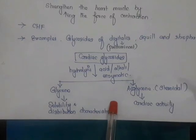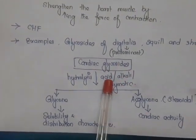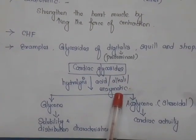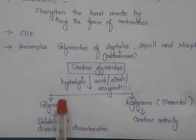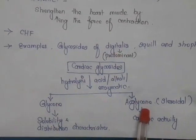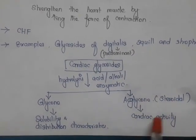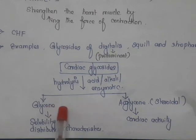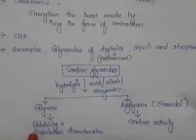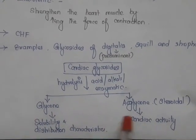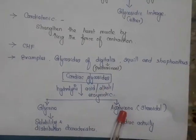Now we will see the hydrolysis reaction of cardiac glycosides. By means of acid, alkali, or enzymatic hydrolysis, we get two products: glycone and aglycone. The aglycone is steroidal in nature and is responsible for cardiac activity. The glycone is responsible for solubility and distribution characteristics. So the main biological activity of a cardiac glycoside resides on the aglycone.